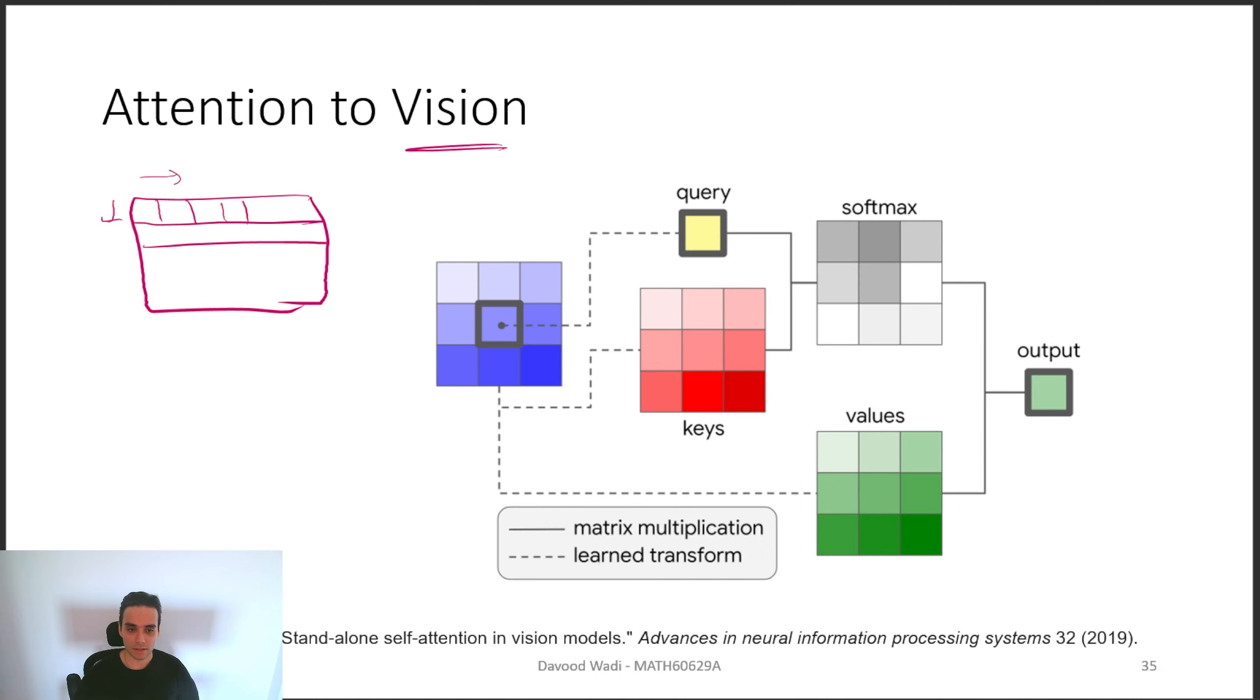And we can extend this idea of creating query, keys, and values matrices to images. This was introduced in 2019, the model that is fully attention and does not use convolution layers.